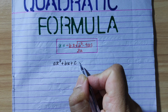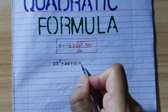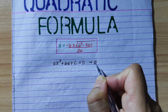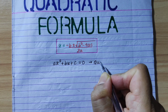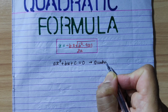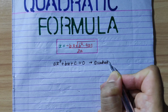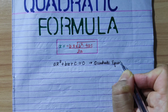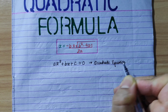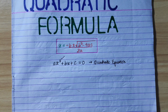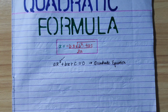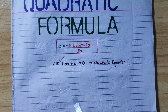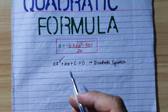ax² plus bx plus c is equal to 0. We call this a quadratic equation. This equation has the highest power of 2. This is a quadratic equation.